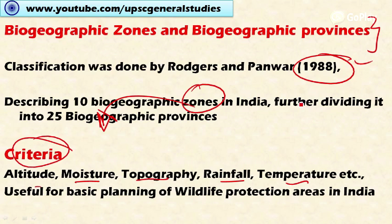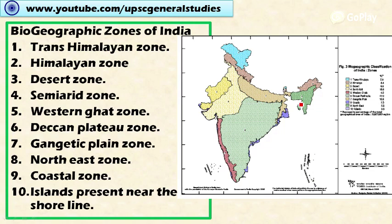This classification is useful for planners and policymakers to undertake proper wildlife protection planning and conservation strategies. Biogeographical zones are essential for policymaking and for studying the geography of India as well as its plant and animal life. Now let's look at the ten important biogeographical zones.